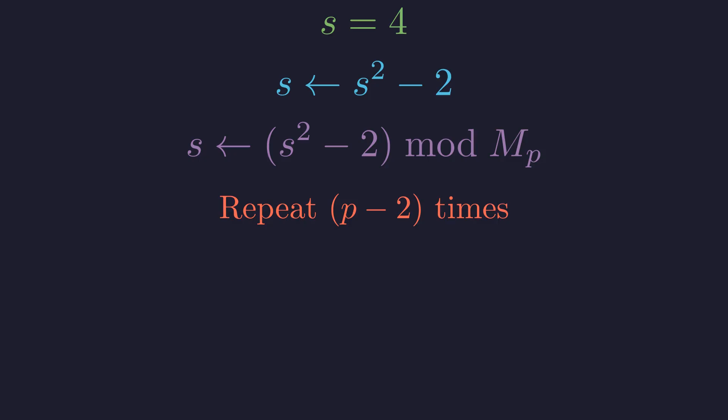For odd prime p, after doing this exactly p minus 2 times, m of p is prime if and only if the final result equals 0. This test is exact.